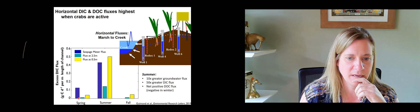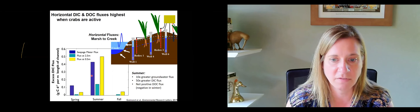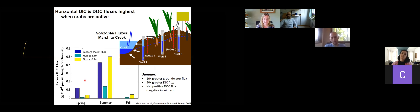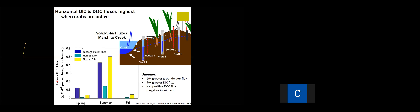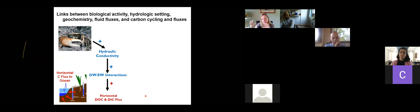We can look at both the flux as measured by hydraulic gradients and the concentration of dissolved inorganic and organic carbon in the water to estimate the horizontal carbon flux between the marsh and the tidal creek. We show three different ways to estimate the water flux combined with dissolved inorganic carbon concentration to show how fluxes of inorganic carbon increase dramatically during the summer: about a 10-times increase in groundwater flux, a 50-times increase in dissolved inorganic carbon flux, and a net positive DOC flux whereas it's negative in the winter. The crabs are increasing hydraulic conductivity, which enhances groundwater-surface water interactions and increases the horizontal flux of carbon from the marsh to the channel and ocean.